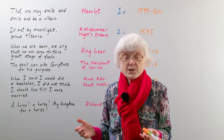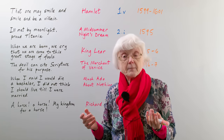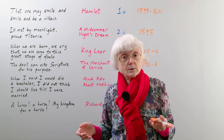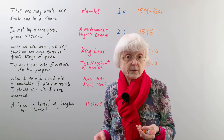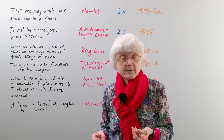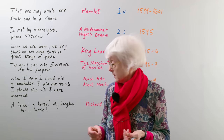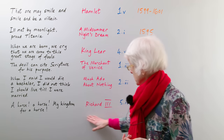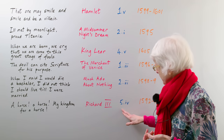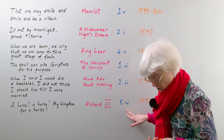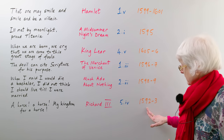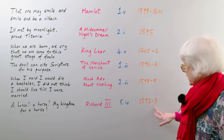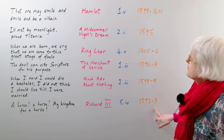Of course, he doesn't get a horse — he gets killed and the new king takes over. That's from Act 5, Scene 4, and it was written in 1592 to 1593.